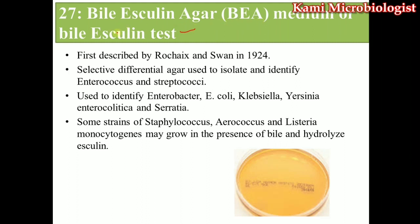This media is also called the Bile Esculin Test. It was first proposed by two scientists named Roche and Swan in 1924. This media is called a selective differential media because through this media we can grow only gram-negative bacteria, and among gram-negative bacteria we mostly grow Enterococcus and Streptococcus, as well as some other bacteria.